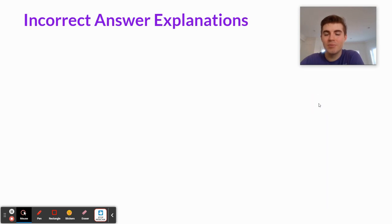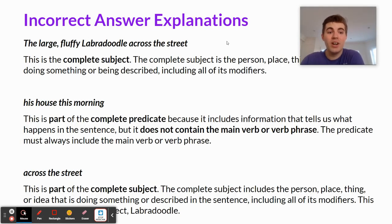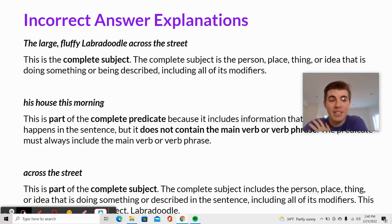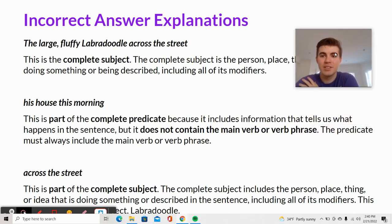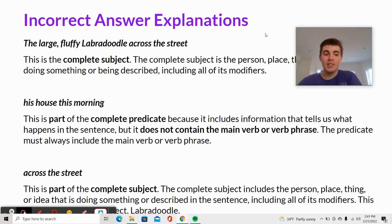Now let's take a look at some of the other answers and why those aren't the correct answer to pick. One of the options was 'the large fluffy labradoodle across the street.' This is the complete subject. The complete subject is the person, place, thing, or idea that is doing something or being described, including all of its modifiers. Moving on: 'his house this morning' is part of the complete predicate because it includes information that tells us what happens in the sentence, but it does not contain the main verb or verb phrase. The predicate must always include the main verb or verb phrase.